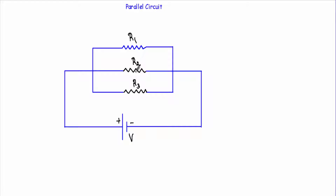Now let me clarify this. Let's say I have three resistances R1, R2, and R3. One end of R1, R2, and R3 are connected at this common point, and the other end of R1, R2, and R3 are connected at another common point. That means one end of these three resistors are connected at one common point and the other end at another common point.